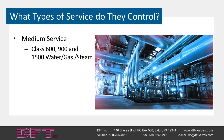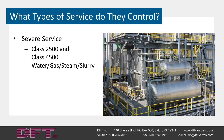Medium service includes class 600, 900, and 1500 in water, gas, and steam service. An example of medium service would be 1,000 PSIG general service steam in refinery, chemical, or pulp and paper plants. Severe service includes class 2,500 and 4,500, water, gas, steam, or slurry service. An example of severe service would be boiler feed water with an inlet pressure of 2,650 PSIG and a pressure drop of 2,580 PSIG. DFT produces specific products for all three types of service. Today we are here to discuss our most challenging of these: severe service.